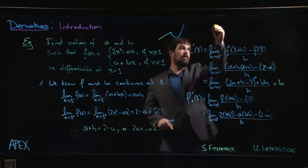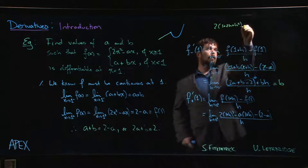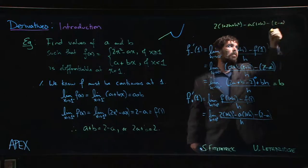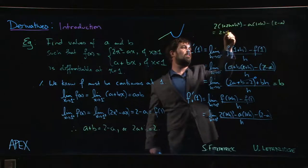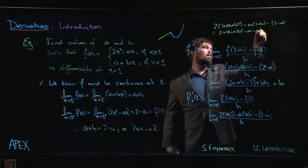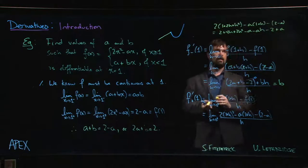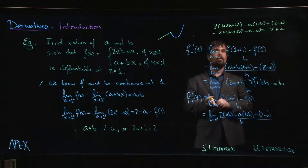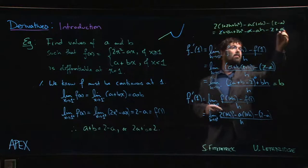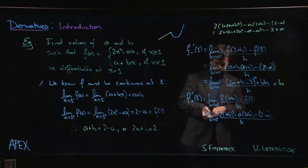So we have 2(1 + 2h + h²) - a(1+h) - 2 + a. So that's going to be 2 + 4h + 2h² - a - ah - 2 + a. And now we hope for